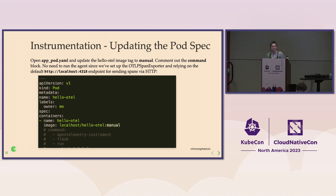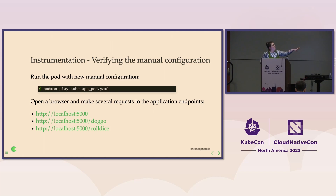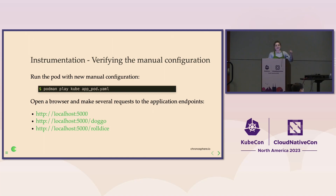Because we're going to be running the OTLP span exporter and relying on Jaeger's native OTLP ingestion to send spans over HTTP, we don't need OpenTelemetry Instrument anymore — we thank it for its service, but we are moving on to manual instrumentation. Make sure your pod is not running, and go ahead and run 'podman play kube pod.yaml.' Make requests to your application endpoints — I like to have a variety of traces, so maybe just make a couple to each of our endpoints: slash, Doggo, and RollDice. Note: we started out with port 8000, so go ahead and use 8000.